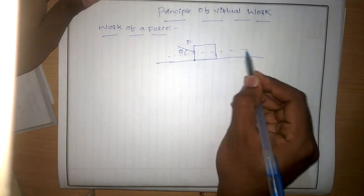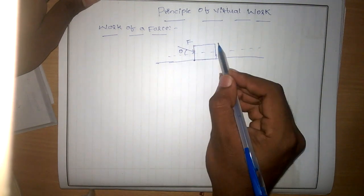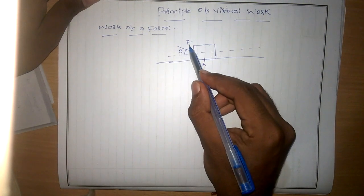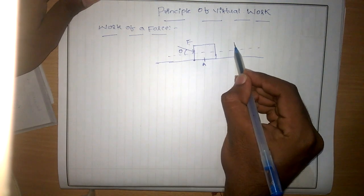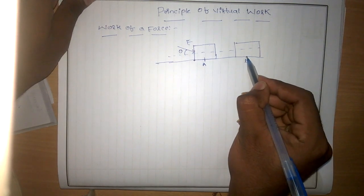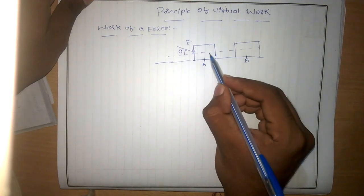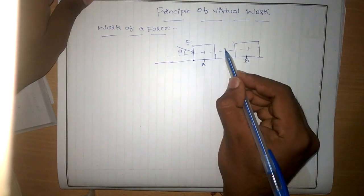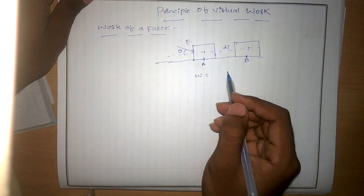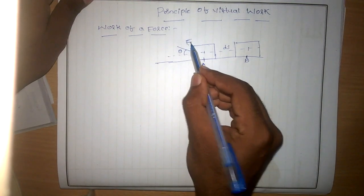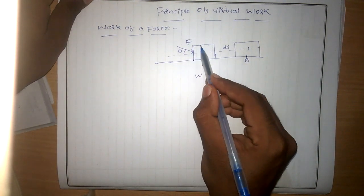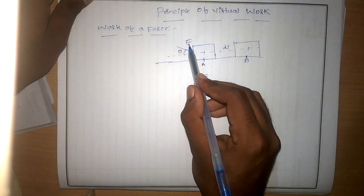By applying this force at angle theta, the body moves or changes its position. The body moves from point A to point B, displaced by a distance ds. The work done by this force is equal to the force acting on it multiplied by the distance the body is displaced by the action of this force.